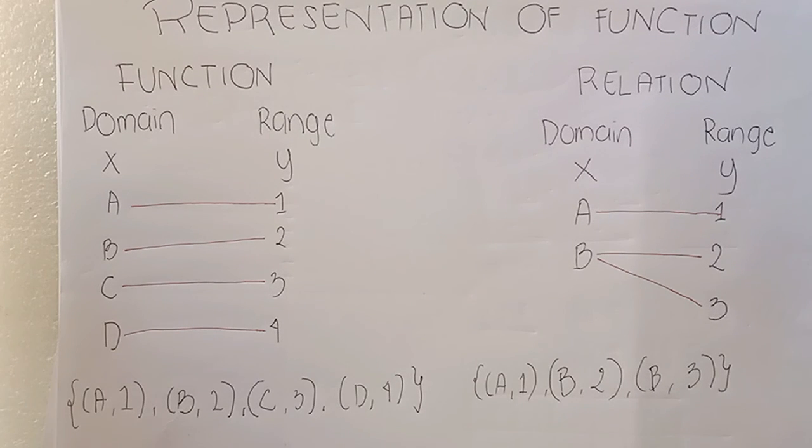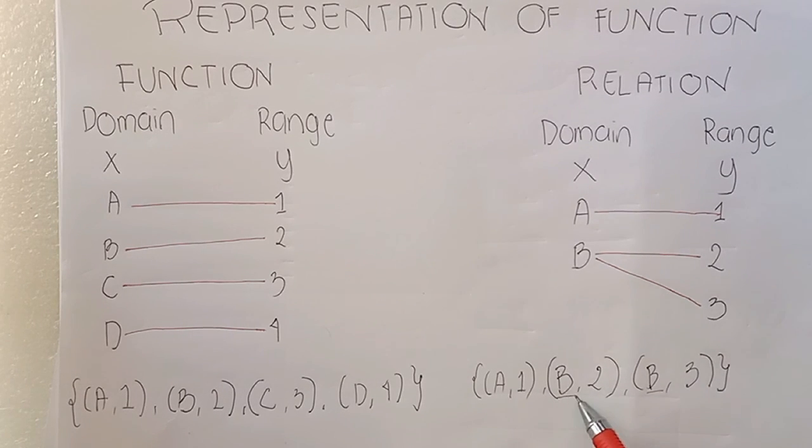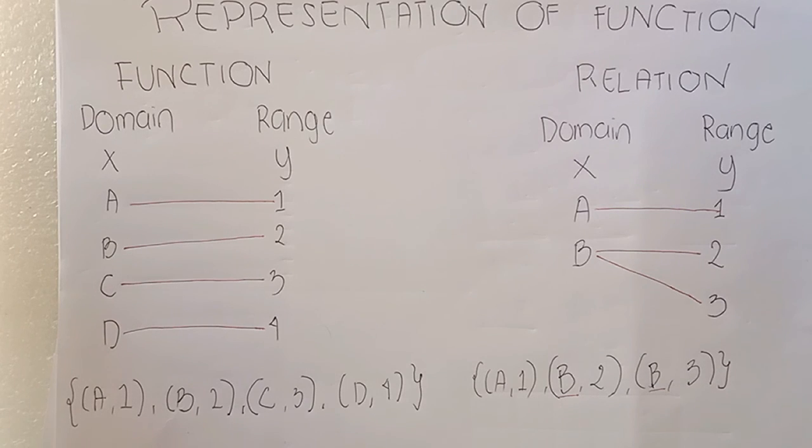As you can see here, unlike the ordered pairs of function, there is a repetition of x, which is B. That is all for topic 1, function and relation.